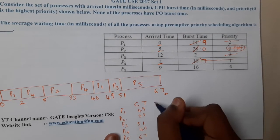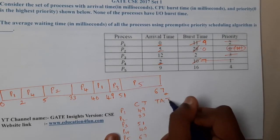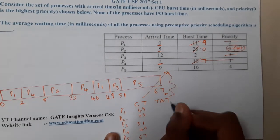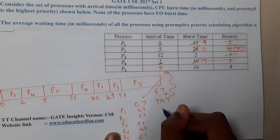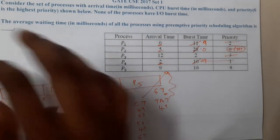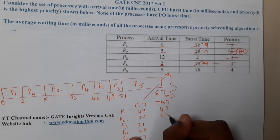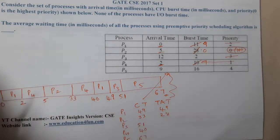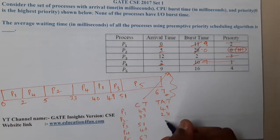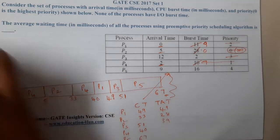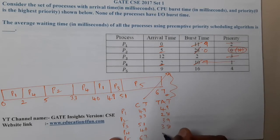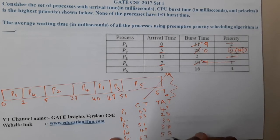Turnaround time is completion time minus arrival time. So: P1 = 49 − 0 = 49; P2 = 33 − 5 = 28; P3 = 51 − 12 = 39; P4 = 40 − 2 = 38; P5 = 67 − 9 = 58.